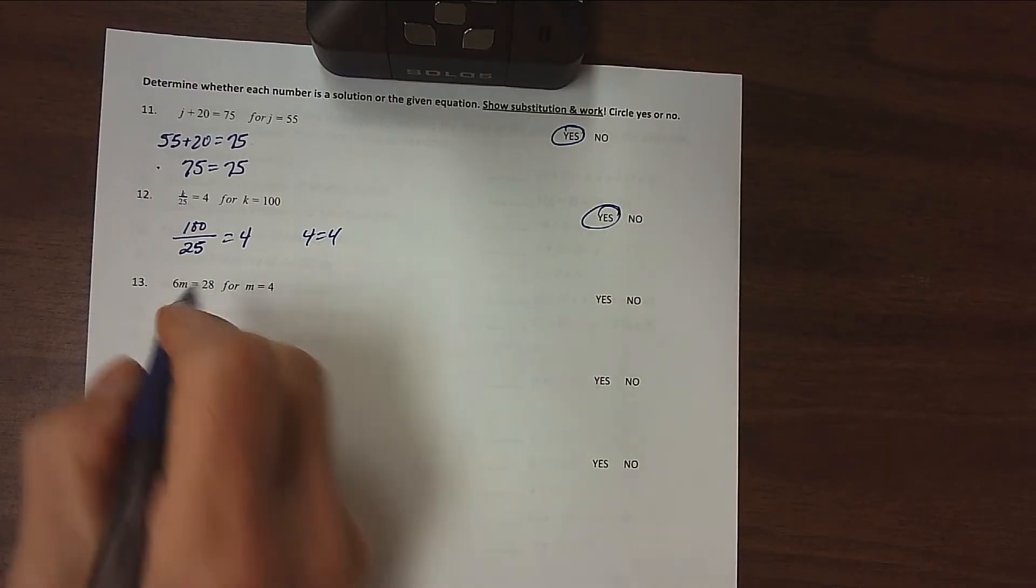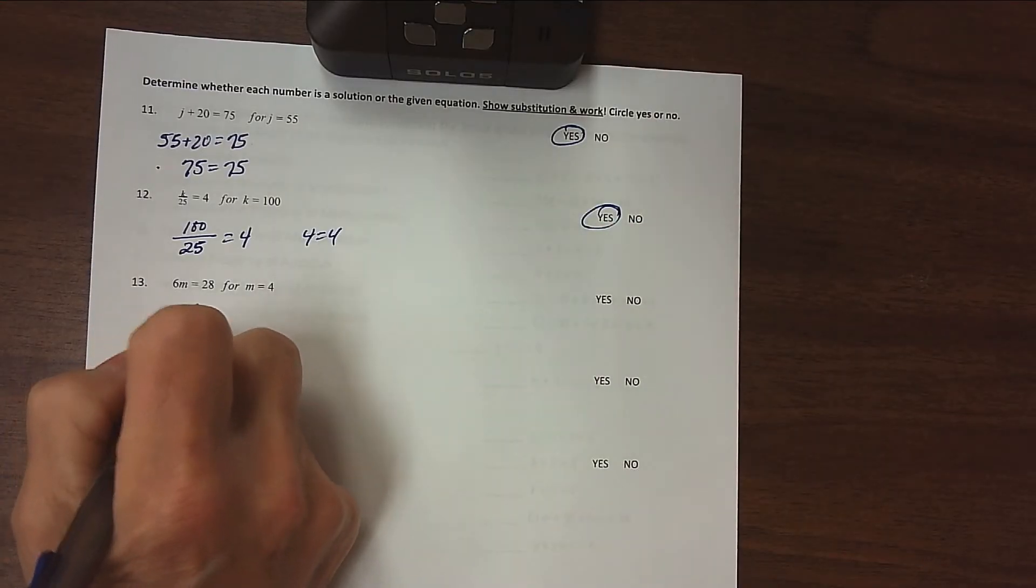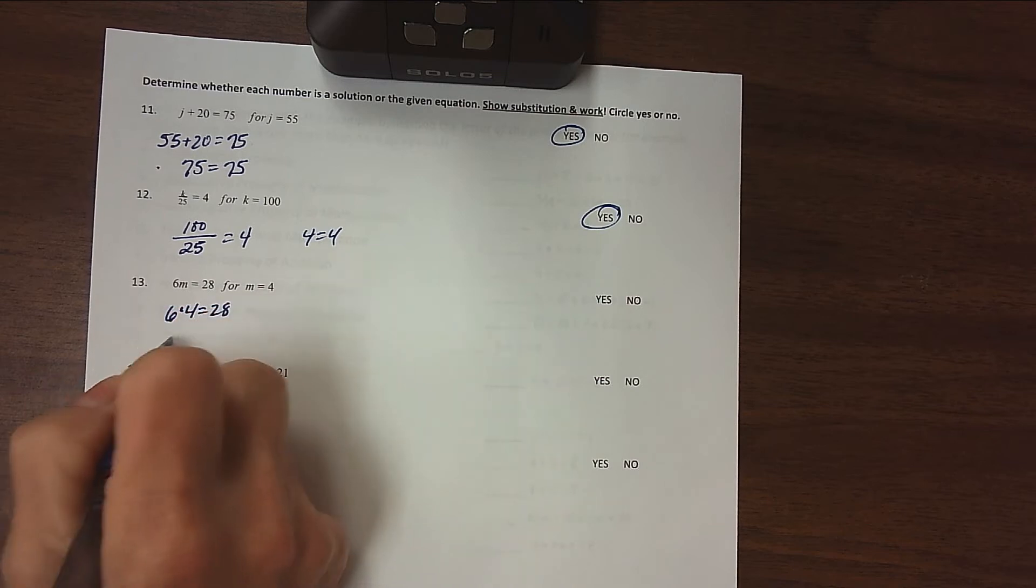6 times m equals 28. If we replace the m with 4, does that equal 28? Well, 6 times 4 is 24, which does not equal 28.